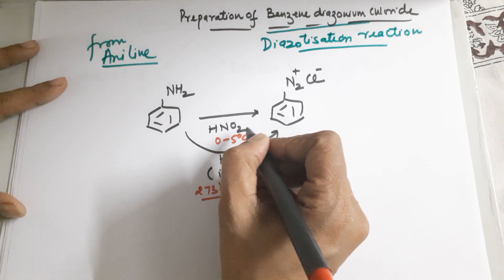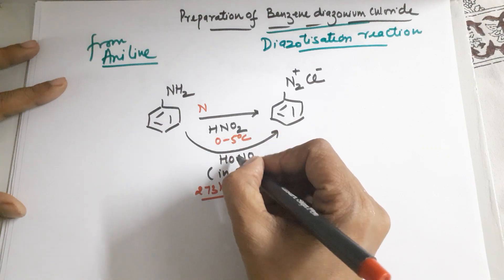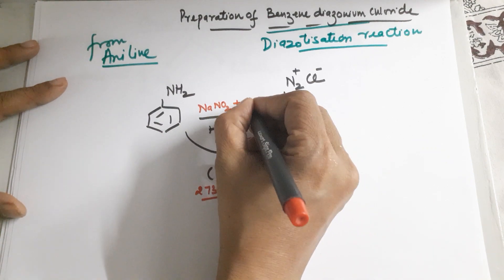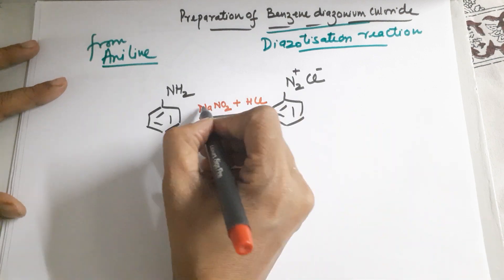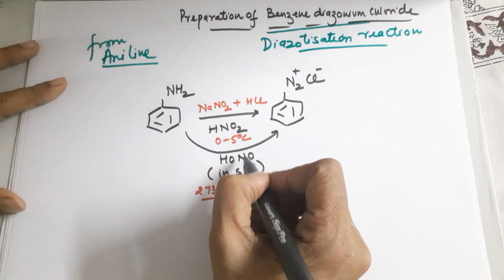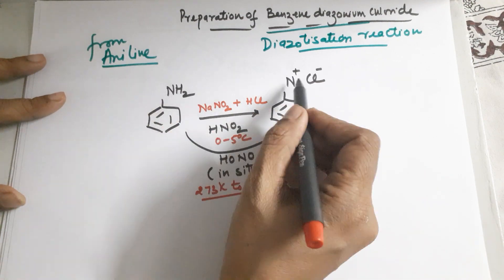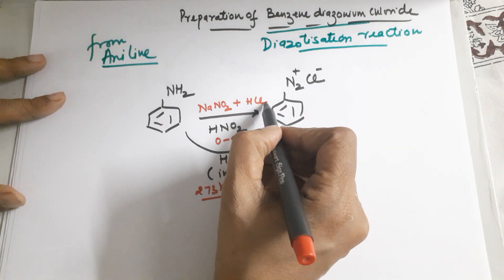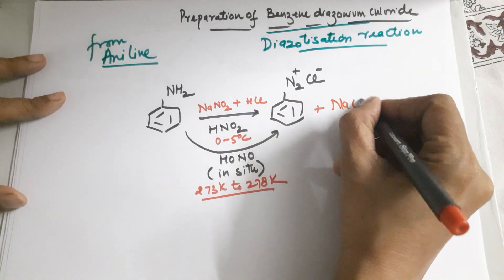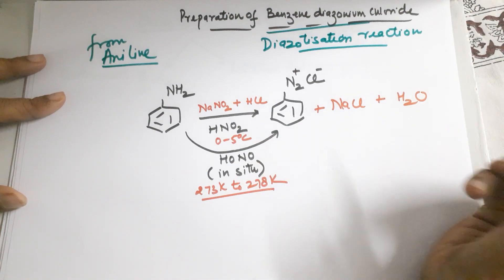As I said, nitrous acid is not available in the market. You need to prepare it. So instead of writing HONO, you write NaNO2 (sodium nitrite) and HCl. These two react to give you nitrous acid, which is the requirement of the reaction.